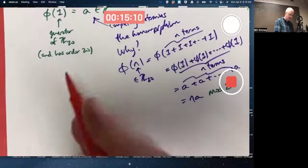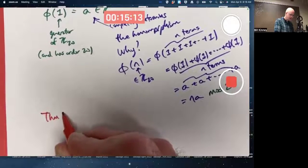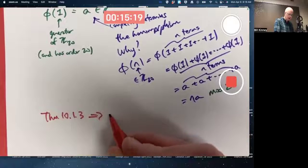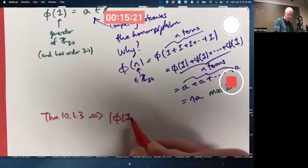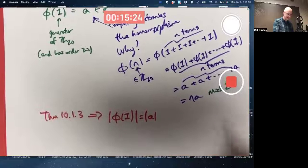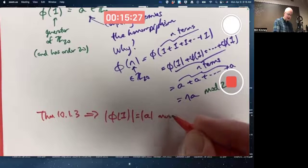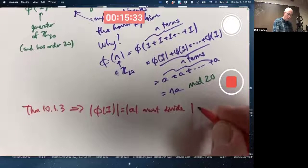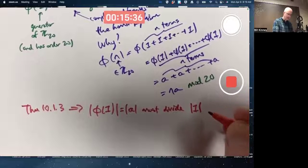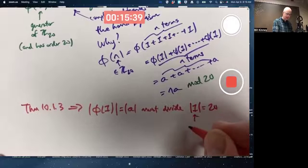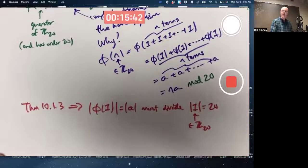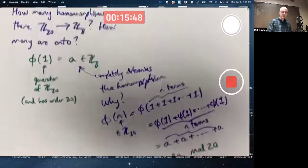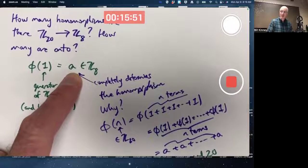The theorem, theorem 10.1, part three, implies the order of the image of one, which is the order of A as an element of Z8, must divide the order of one as an element of Z20, which is 20. This is an element of Z20. You can also apply Lagrange's theorem. A is an element of Z8. It's got to have order that divides eight.